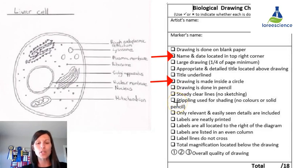Clear, steady lines? Yes. Stippling used for shading. Not really evident that they use a lot of stippling but there are no solid colors and there's no solid pencil to fill in coloring so we'd give them a mark there.